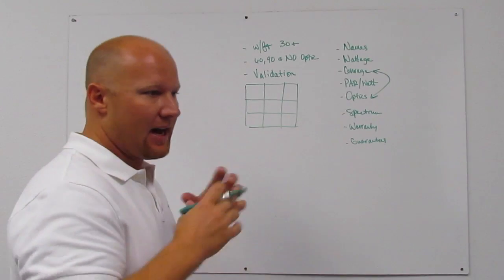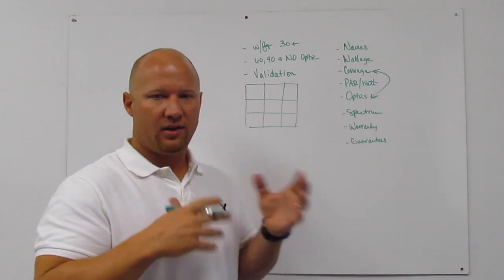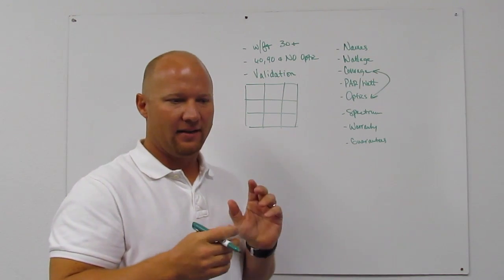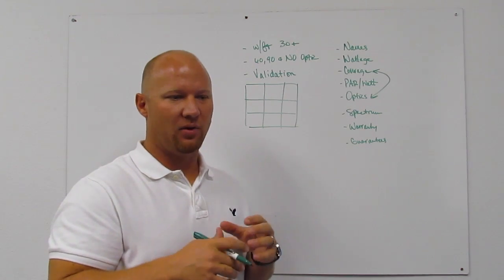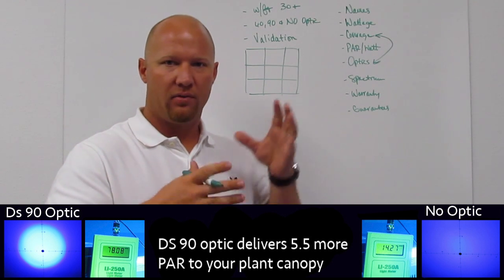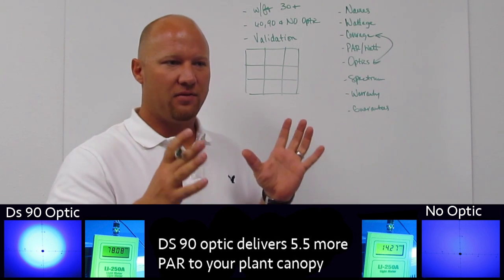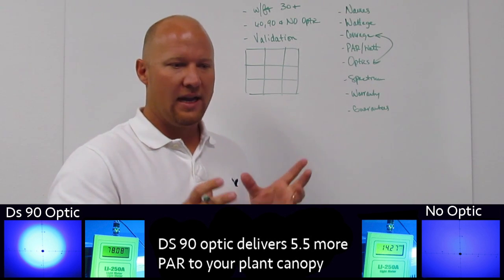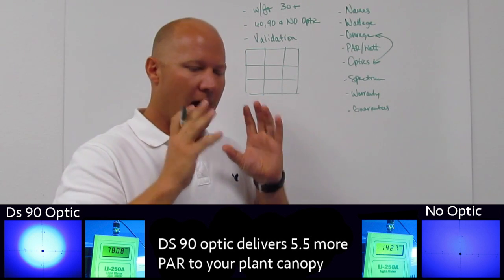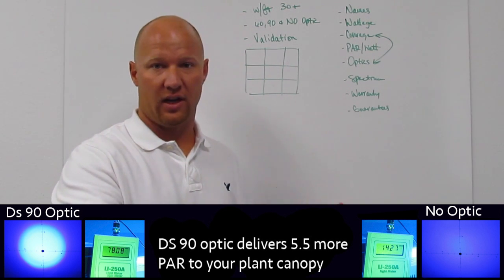Every light is either going to have a secondary optic or not. There's a myth in this industry that secondary optics reduce the light output, and the troubling thing is it's both true and false. It's true because any kind of material put over an LED reduces the total light output. But if you take a secondary optic like a TIR built for that LED, it actually creates a compounded effect — a much higher effect to your plants over the space you're covering.